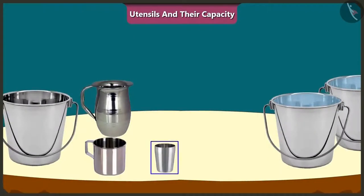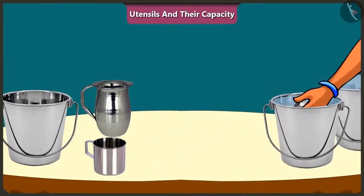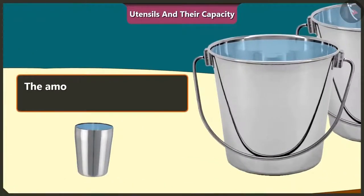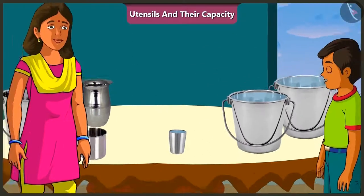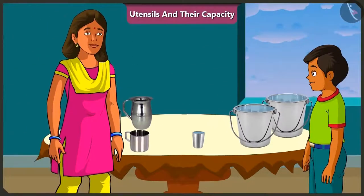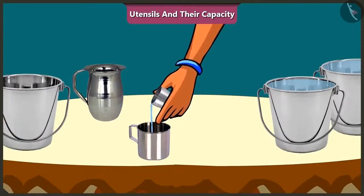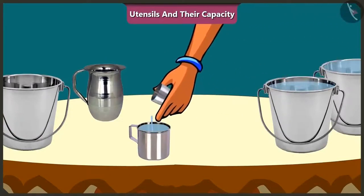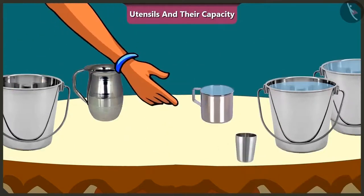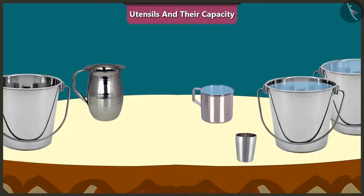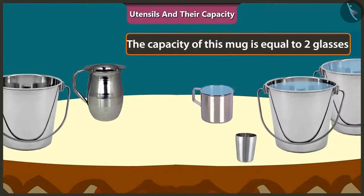How is that possible? First of all, I will fill this glass completely with water. The amount of water in this glass is its capacity. Now, with the help of this glass, I will fill this mug. One glass and one more, that is two glasses. We can fill this mug with two glasses of water. This shows that the capacity of this mug is equal to two glasses of water.